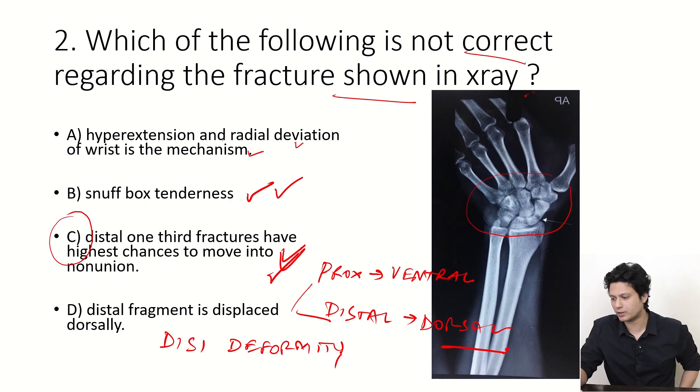The precarious vascularity of the scaphoid and its clinical outcomes are important concepts to understand. Nowadays, questions cannot be answered simply by mugging up one-liners — the question pattern has been evolving to become more practical, more explorative, and requires conceptual understanding to mark the correct answers. For the rest of the questions, please refer to the next video. Thank you so much and all the best.